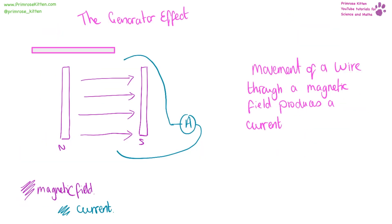The generator effect is just an extension of Fleming's left hand rule. When we have a wire and we move it through a magnetic field, we are going to be generating a current.